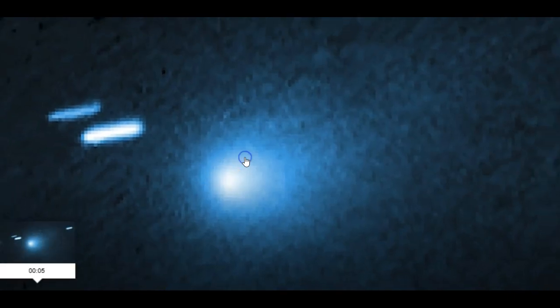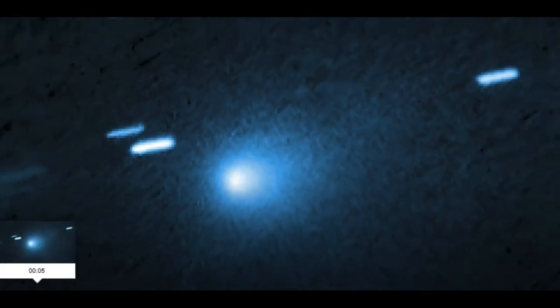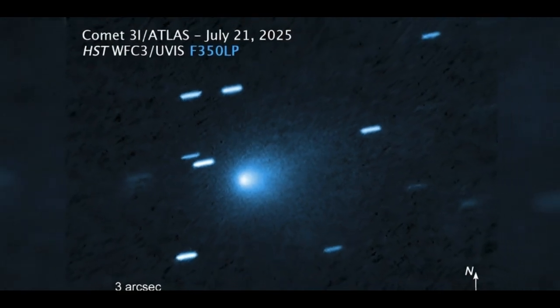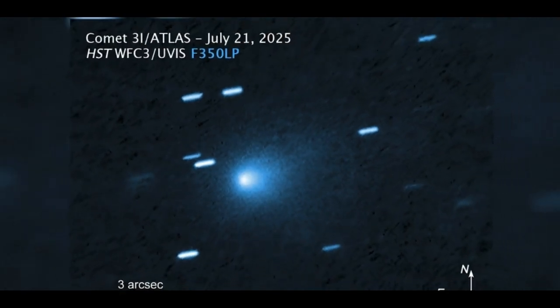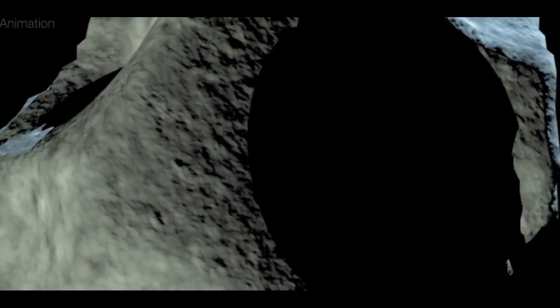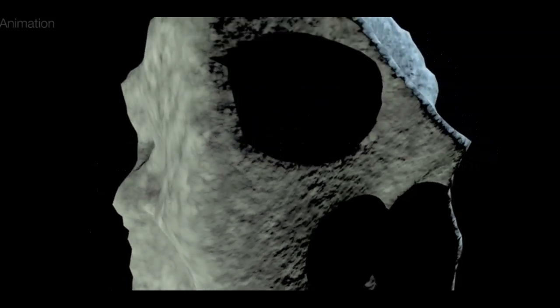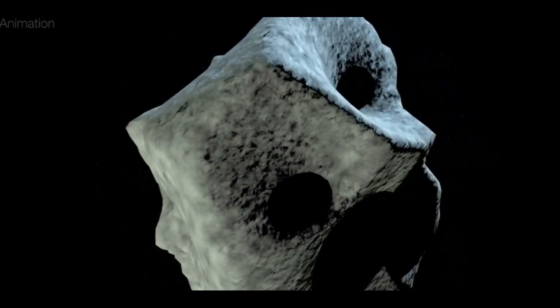A team of astronomers captured the clearest image to date of the unexpected interstellar comet 3I Atlas. Astronomers are now able to more precisely estimate the size of the comet's solid icy nucleus.